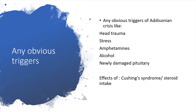We also have to check for obvious triggers of an Addisonian crisis, such as history of head trauma in the patient, stress, amphetamines, alcohol, recently damaged pituitary, and a history of Cushing's syndrome or exogenous steroid intake. We have to take a thorough history around all of these before starting the procedure.